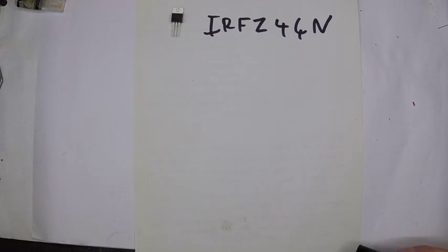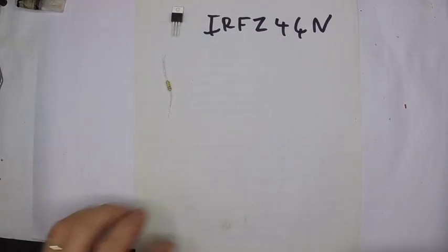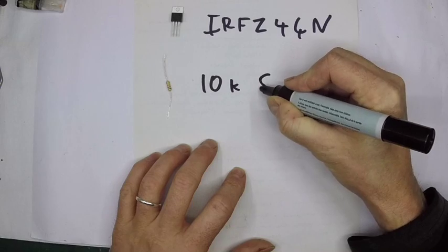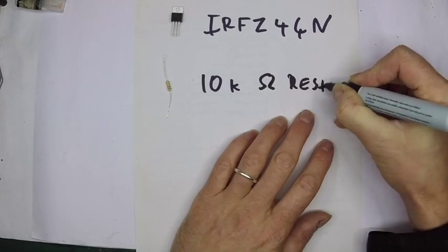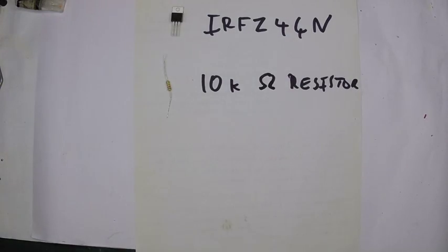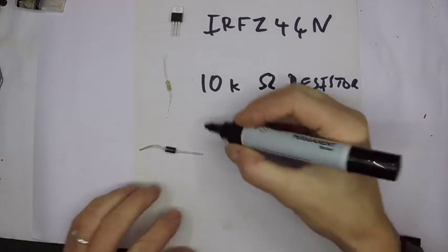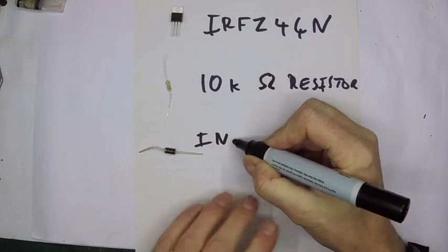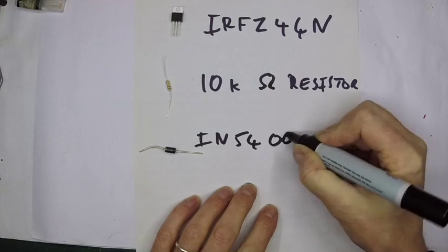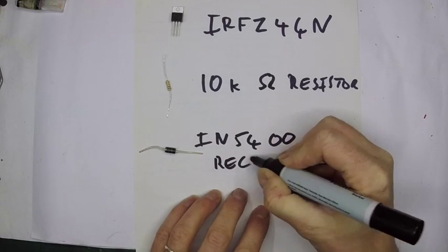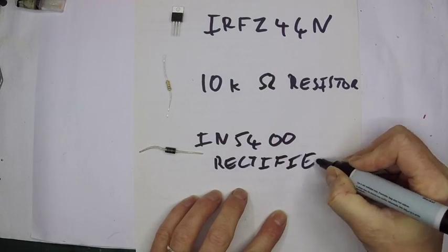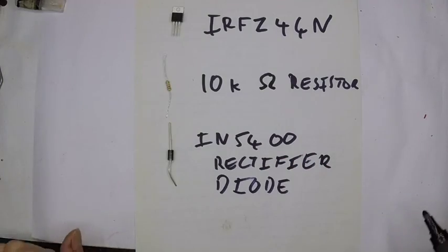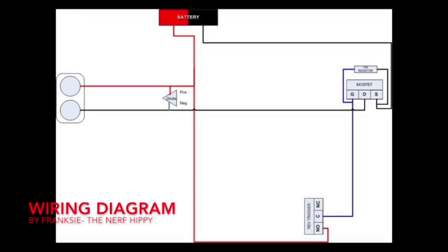So those are not absolutes, just remember that those are at room temperature, not when they're overheated. The next thing you need is a 10,000 ohm resistor. The last thing you need is this, which is an IN5400 rectifier diode. Here is the circuit diagram I'll be using.